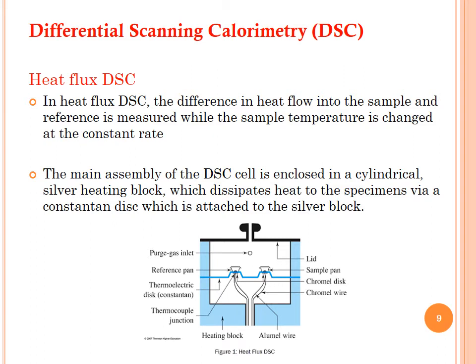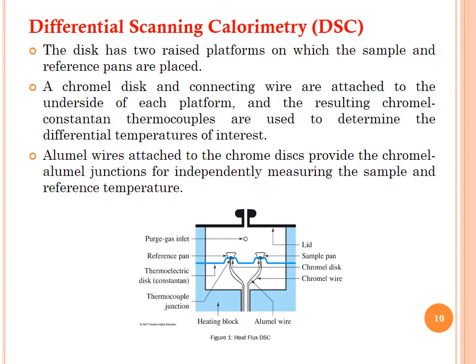In heat flux DSC, the difference in heat flow into the sample and reference is measured while the sample temperature is changed at a constant rate — fixed by the temperature program. The main assembly of the DSC cell is enclosed in a cylindrical silver heating block, which dissipates heat to the constantan disk attached to the silver block. The disk has two raised platforms on which the sample and reference pans are placed. A chromel disk and connecting wire are attached to the underside of each platform, and the resulting chromel-constantan thermocouples are used to determine the differential temperature of interest.